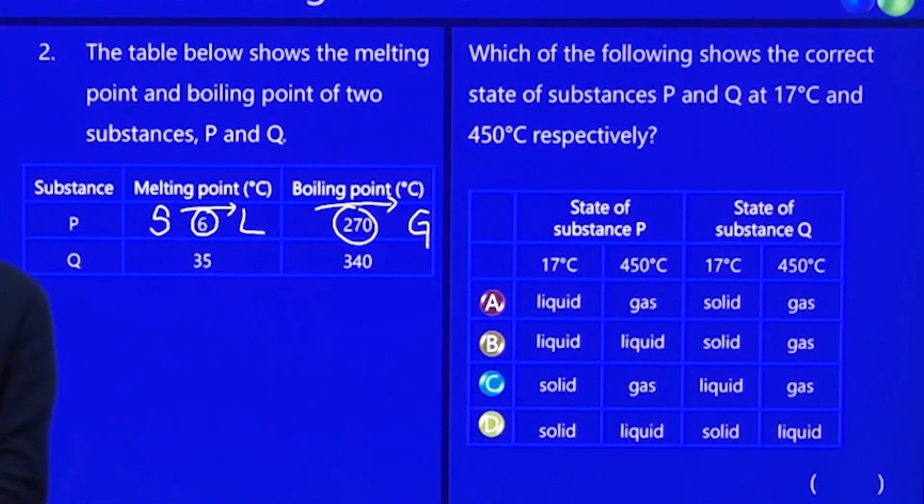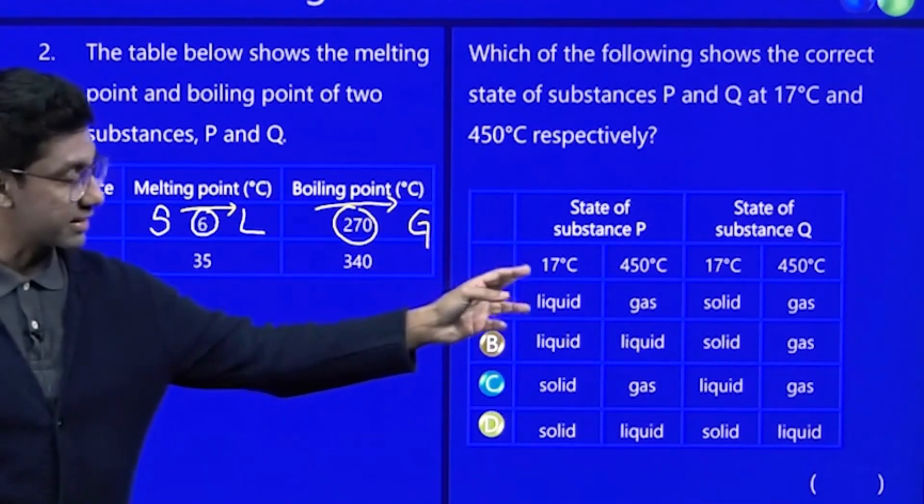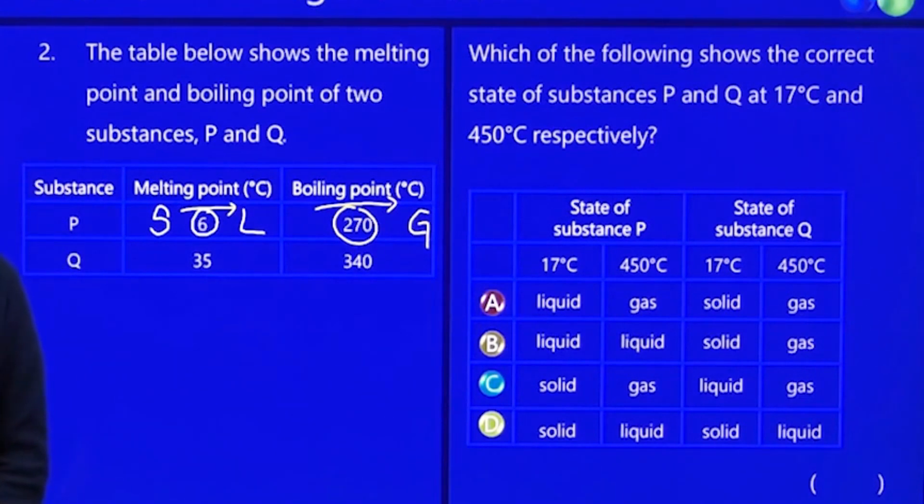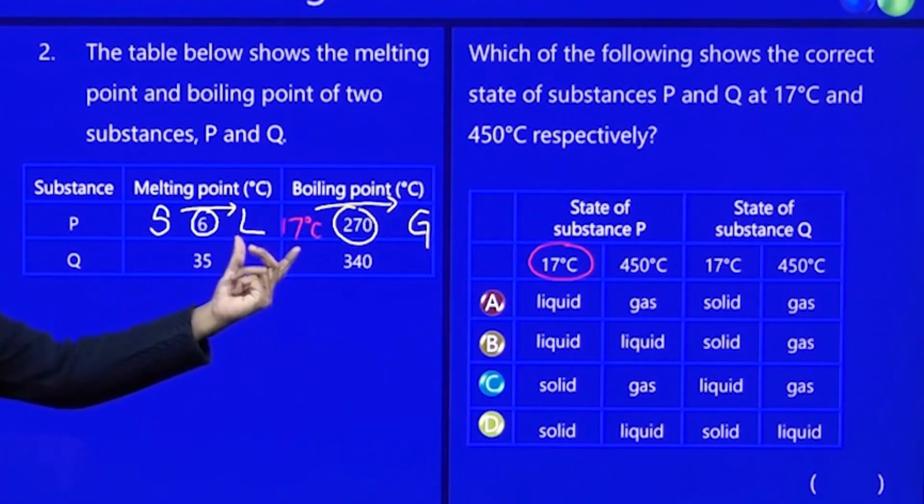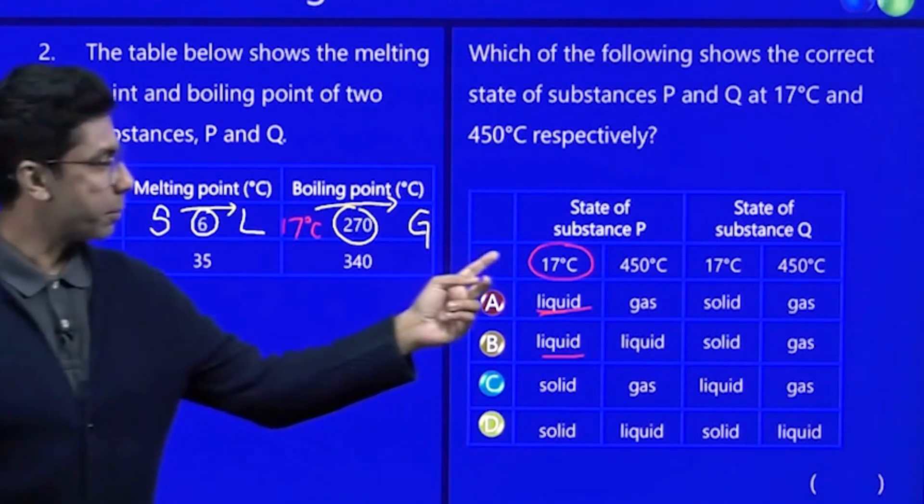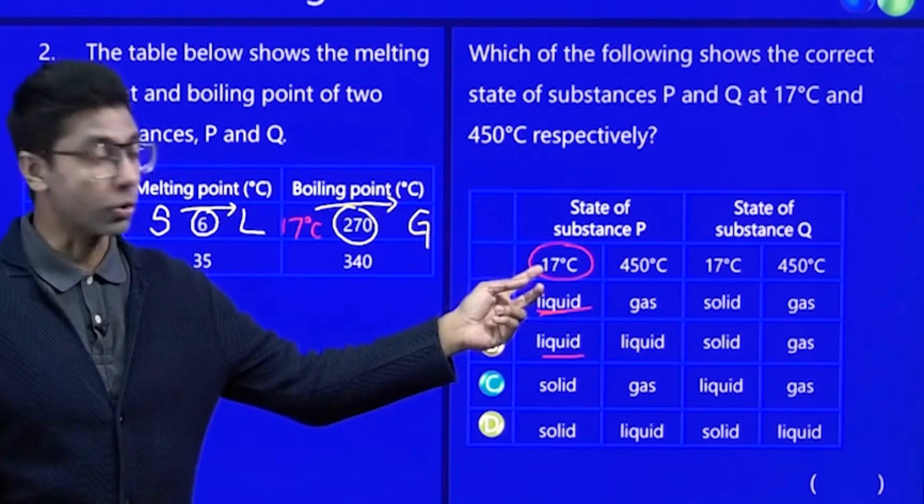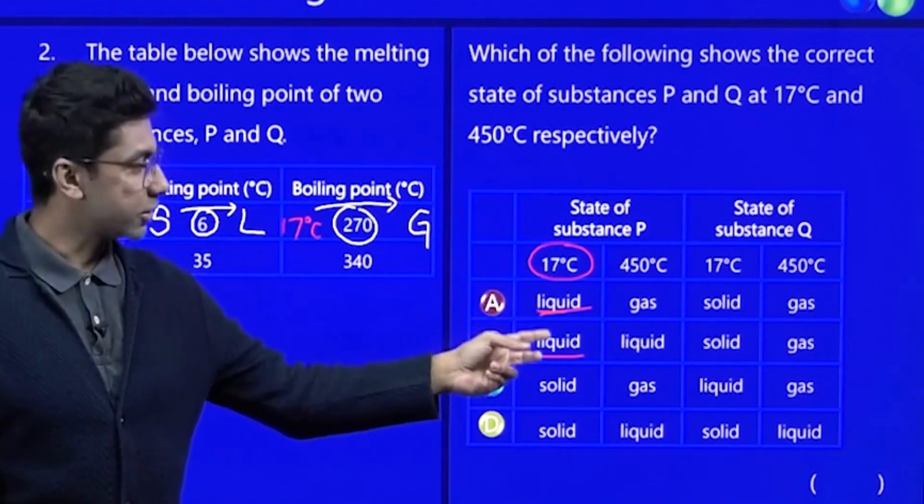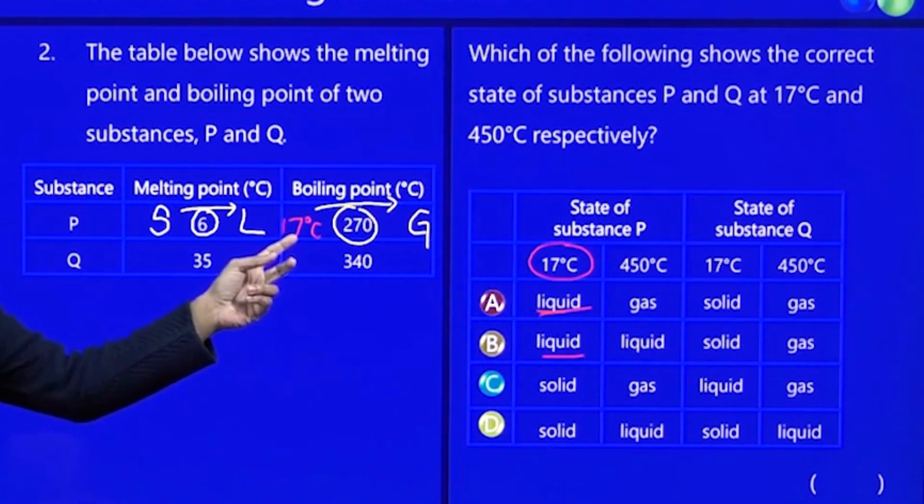And so here we can look at state of substance P at 17 degrees Celsius. So we go straight in. We look at 17 degrees Celsius. 17 will be here. And therefore, he is in the liquid zone. So he will be a liquid. Not a solid. Because solid, he must be below 6 degrees Celsius. Since the temperature is 17, he is asking you what state it is in. So I can confirm that it will be in the liquid state. Because I go and put it in here, and I am in this zone.